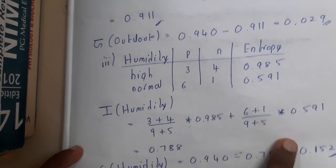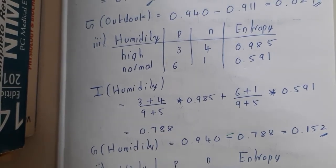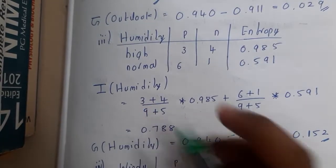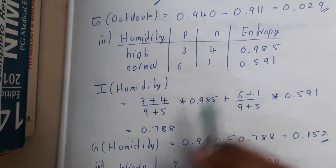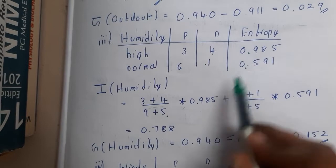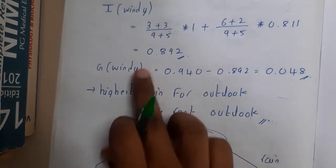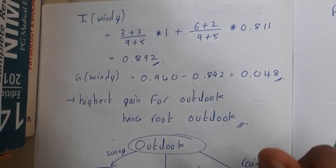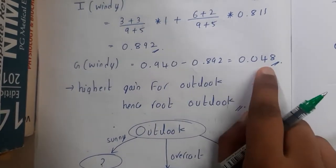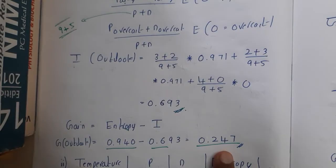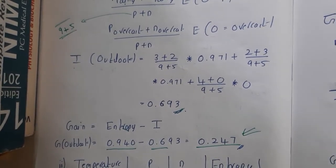For humidity, substitute values and get approximately 0.780. For wind, get its corresponding value. Among the gains — outlook 0.247, temperature 0.048, humidity 0.152, wind 0.811 — wait, actually the maximum value here determines the root. The highest gain determines the root node of the decision tree. So you select that attribute as the root.